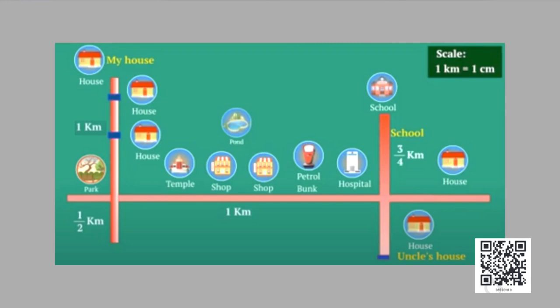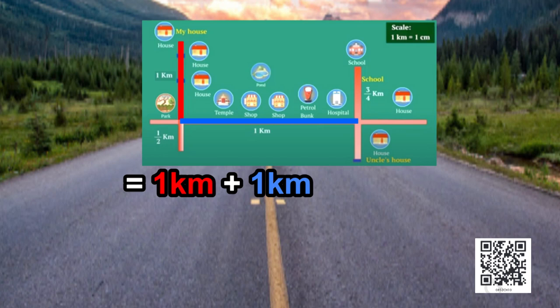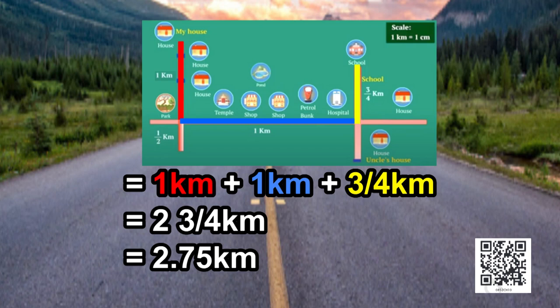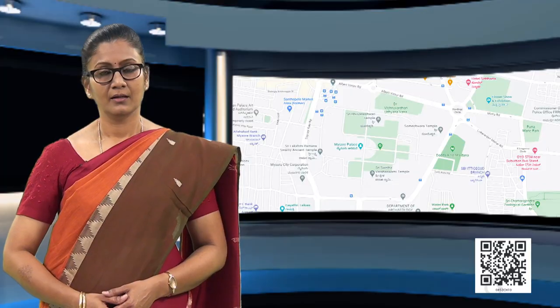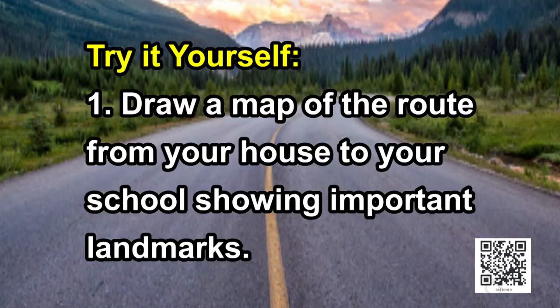So this is how the scale in a map allows us to find the distance between any two landmarks. In the above map, the distance between the house and the school equals one kilometer plus one kilometer plus three-fourths of a kilometer, which is equal to two and three-fourths kilometers, or in other words, 2.75 kilometers. Now that you have learned how to draw maps with a given scale, try drawing the following maps on your own.